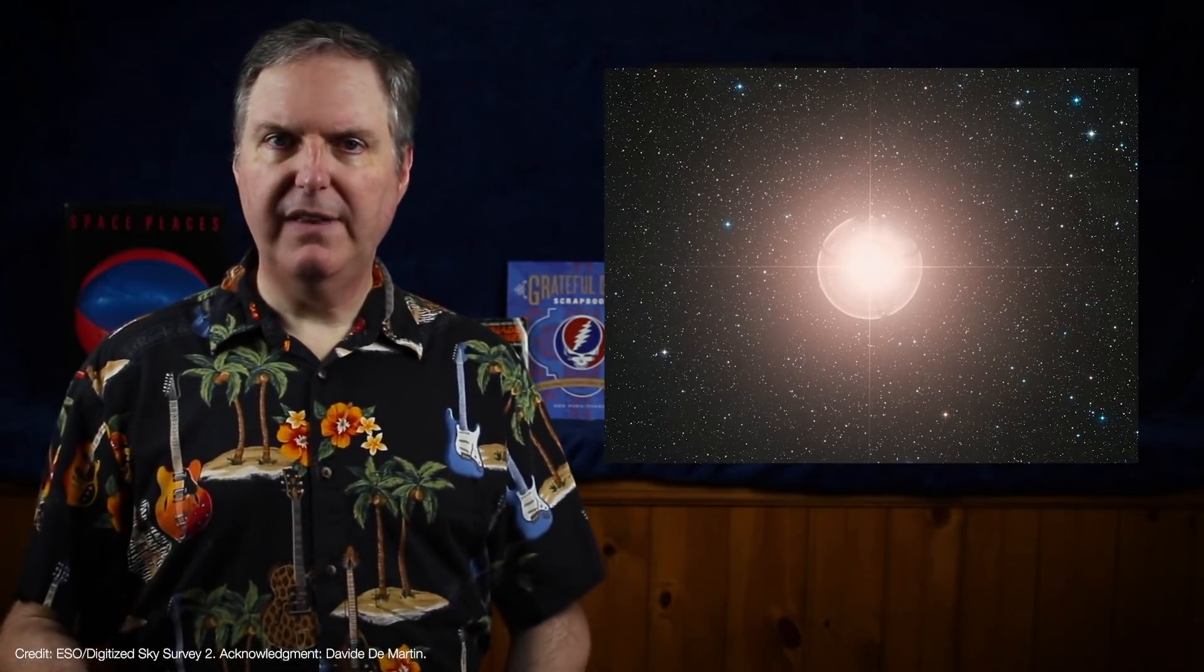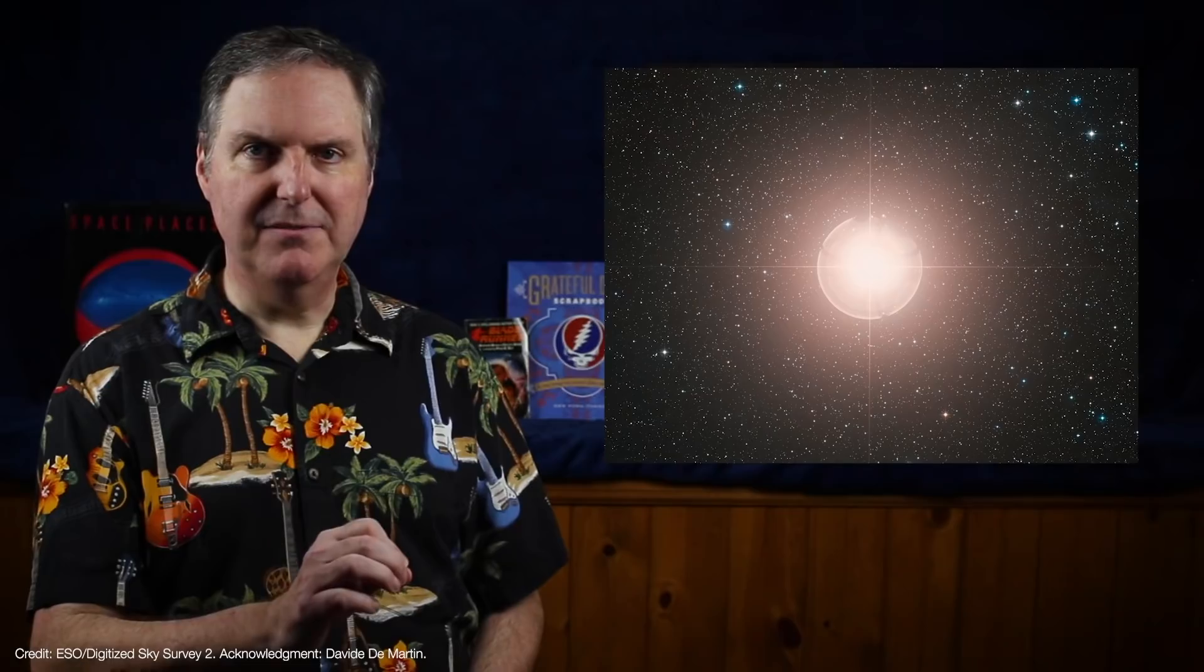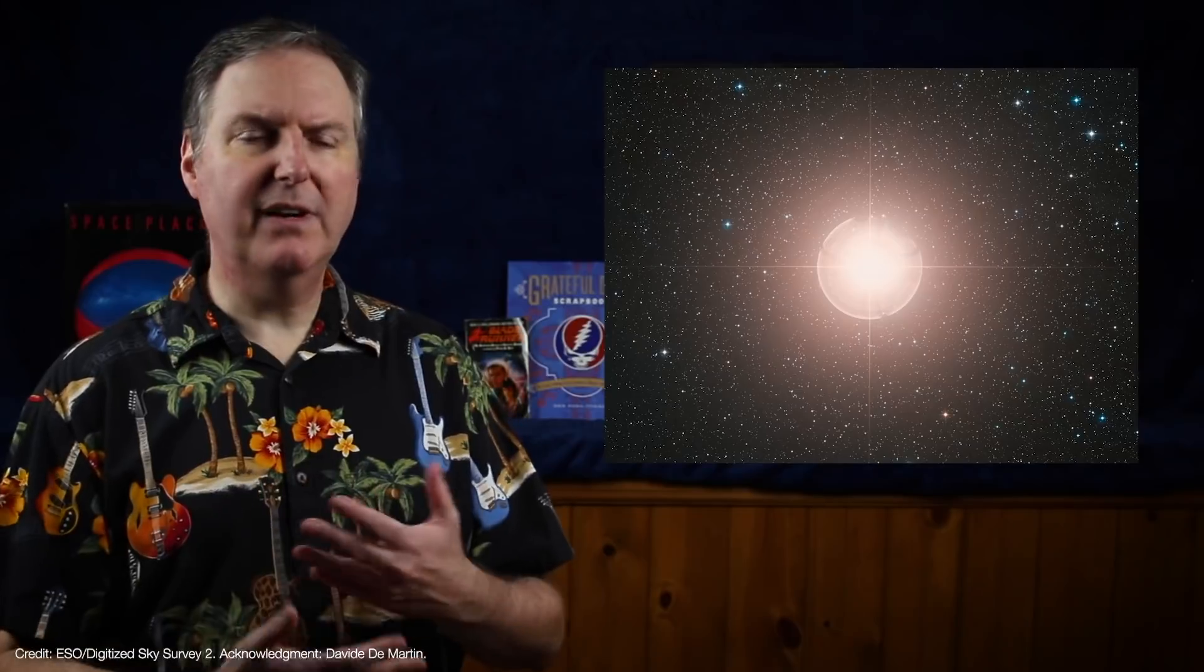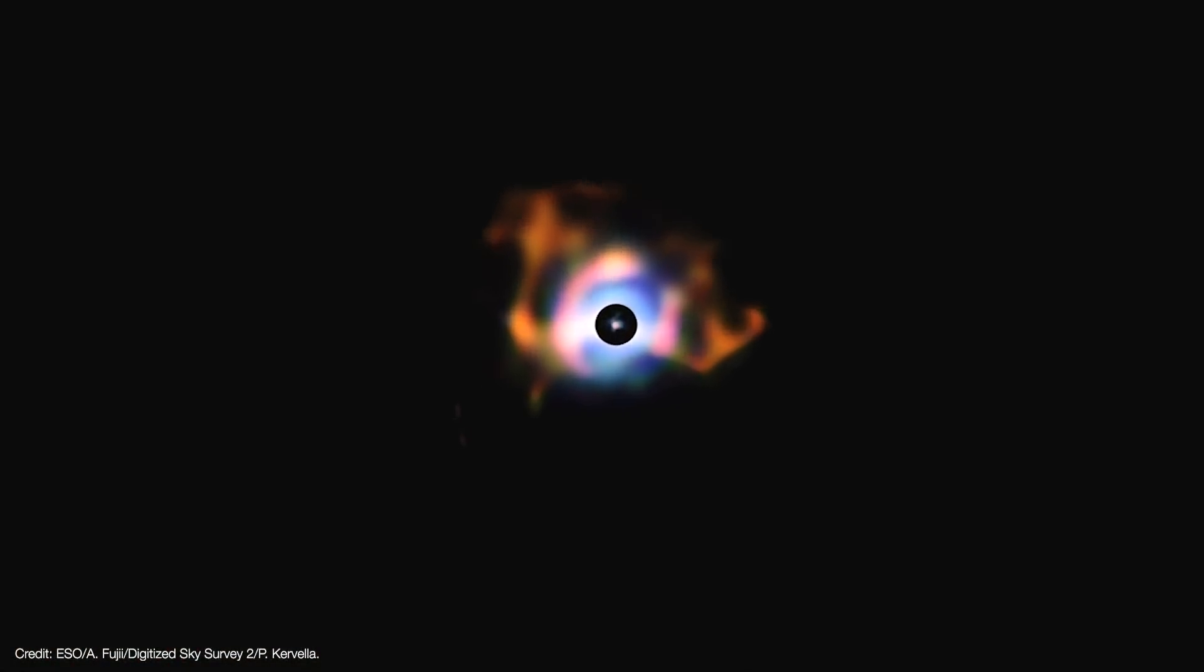Betelgeuse is a red supergiant star that's near the end of its life. It's so large that if it were placed at the center of our solar system, its outer layers would reach out to Jupiter's orbit. It's also very massive. We don't know its precise mass, but it's thought to have started out life at roughly 20 solar masses or so. It's been losing mass ever since, and will likely end its life in a core collapse supernova.